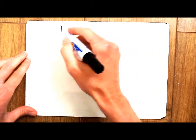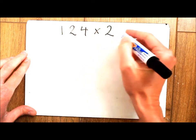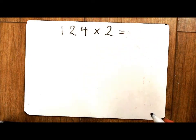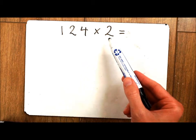So imagine you have the sum 124 times 2. This method is called the short method because you are only multiplying by a one digit number.